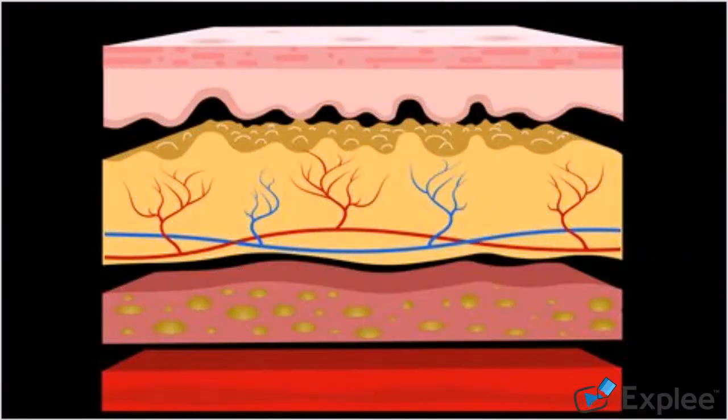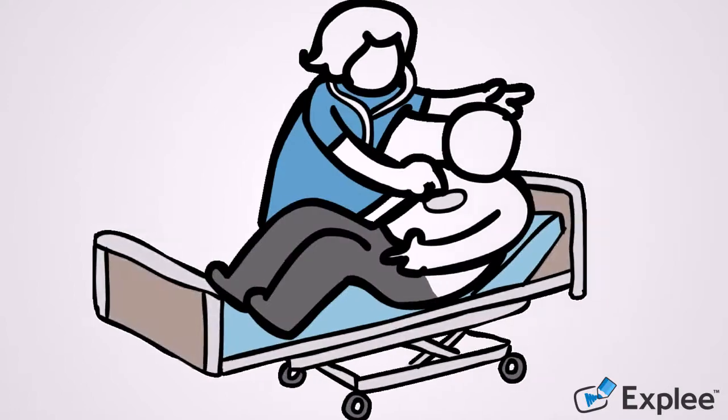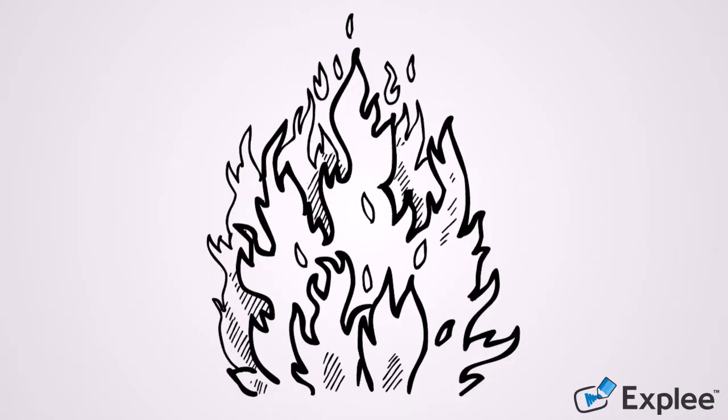UVA light penetrates deeper into the skin, in what is called the dermis. When you hear UVA, think aging. When you hear UVB, think burning.